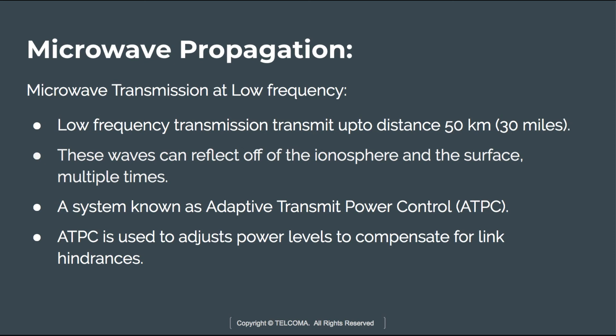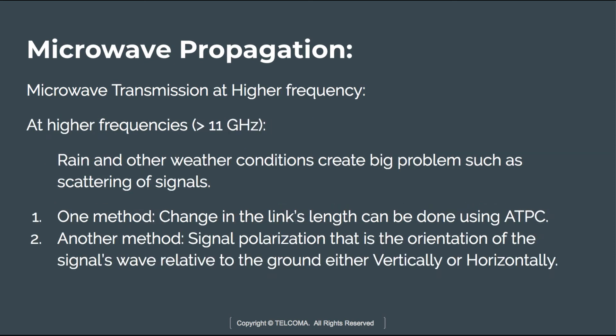At higher frequencies, greater than 11 GHz, rain and other weather conditions create big problems such as scattering and reflection of signals. One method to address this is to change the link length using ATPC. Another method is signal polarization, which refers to the orientation of the signal wave relative to the ground, either horizontal or vertical.